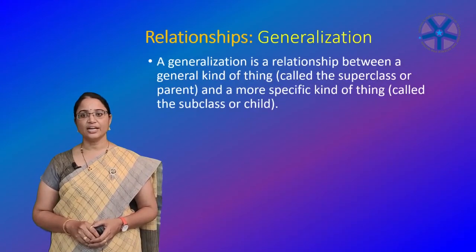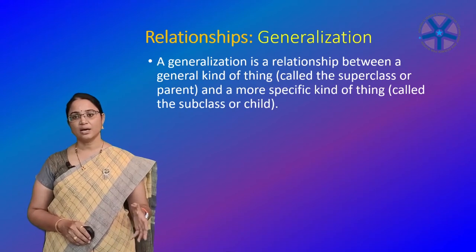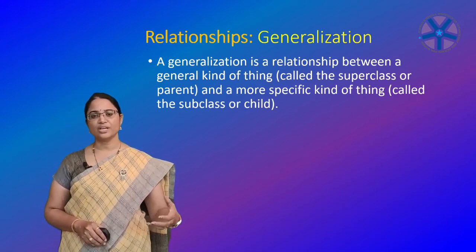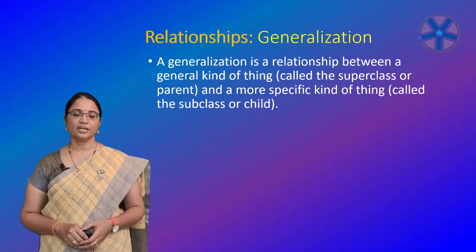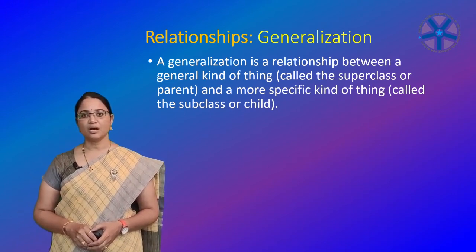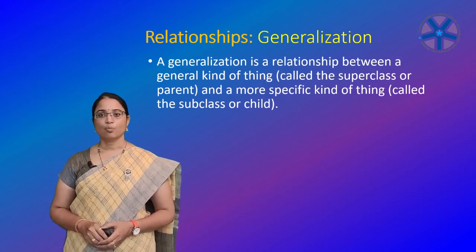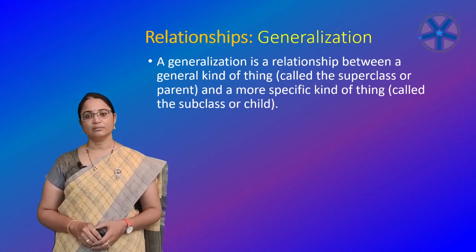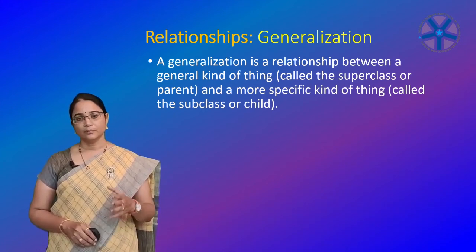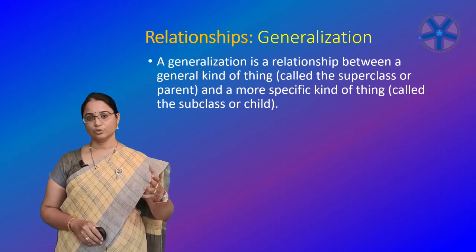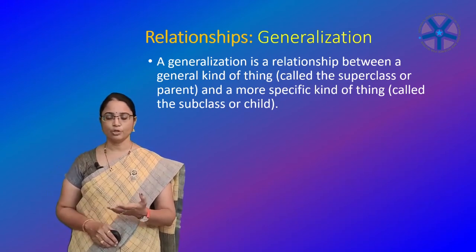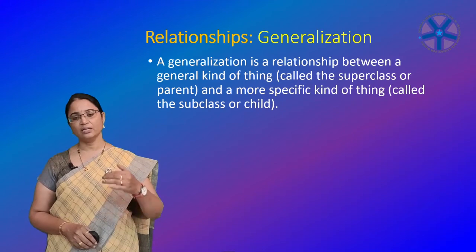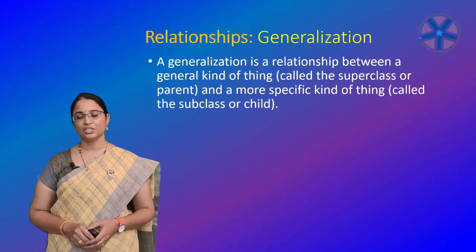Coming to generalization: a generalization is a relationship between a general kind of thing — a superclass, parent class, or base class — and a more specific kind of thing, such as a subclass or child class. Generalization is sometimes called an 'is-a-kind-of' relationship. For example, car is a vehicle. Vehicle is generalized and vehicles may be many types of specializations like cars, lorries, and buses.